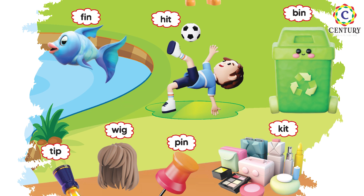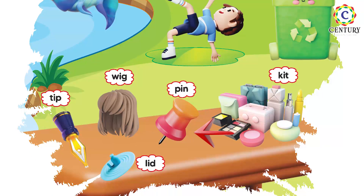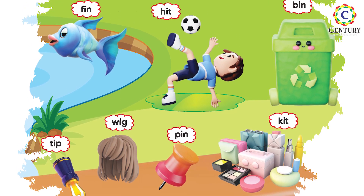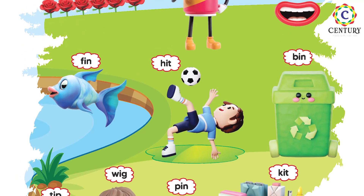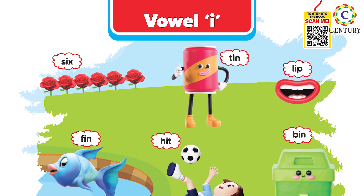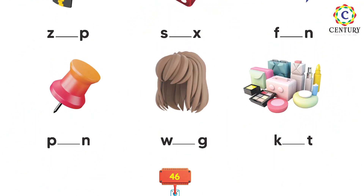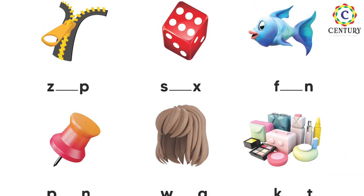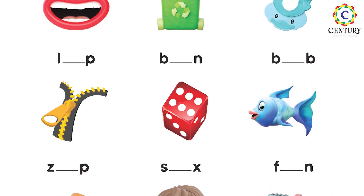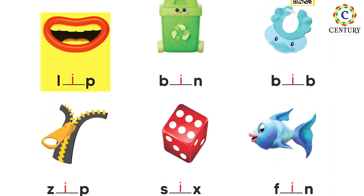Wig, and the next one is pin — P, I, N — pin. Okay bachho, so is tarah se hum apna vowel sound of letter 'i' use karate hain. Now aapne kya karna hai — neche jo diye gaye words hain unka missing sound likhna hai.